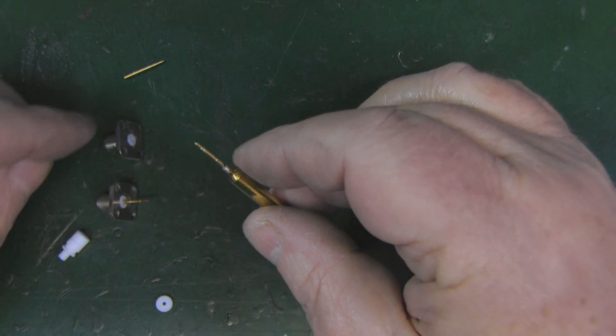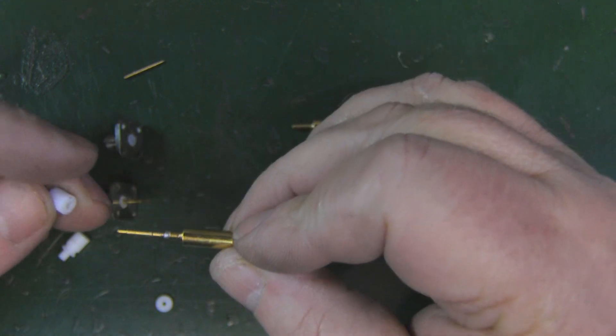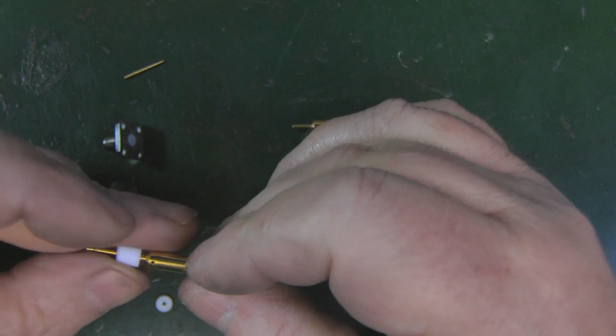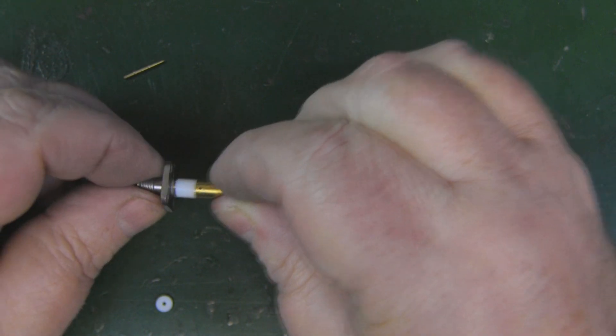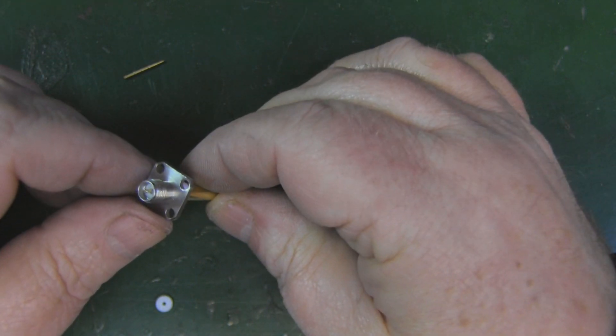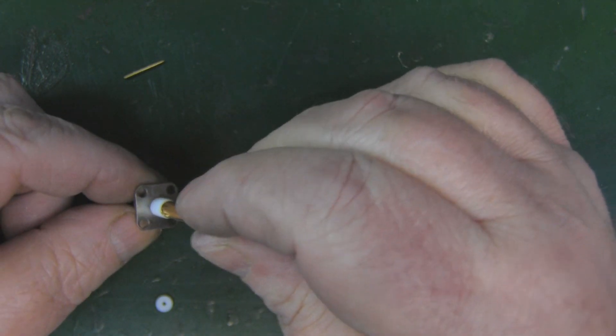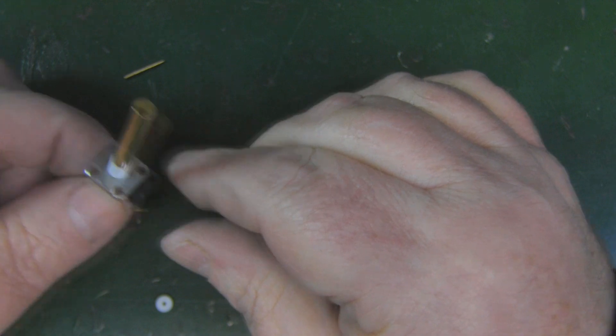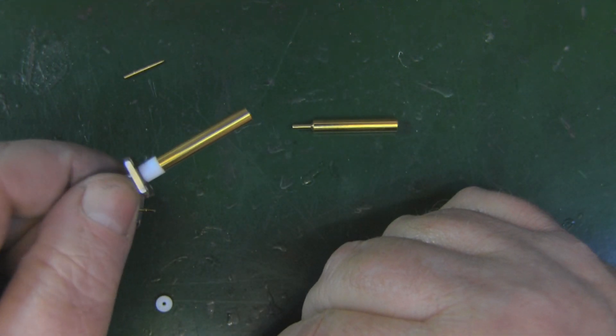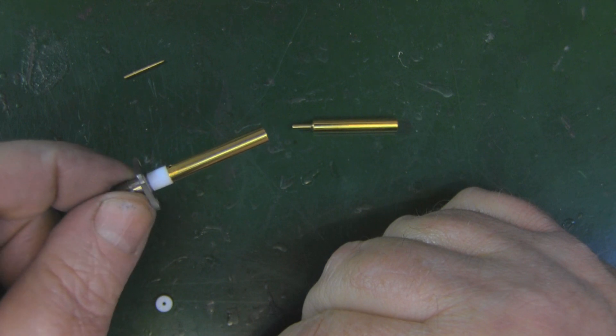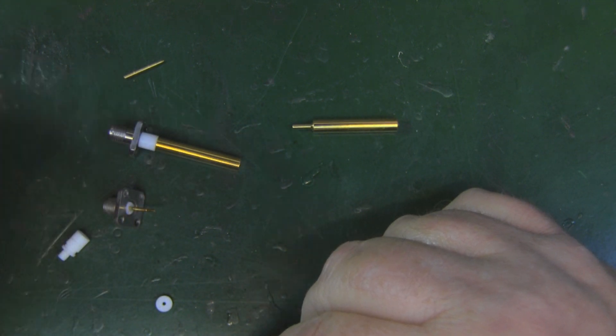I've soldered on the pin of one of the SMA connectors onto the end of the element here. I can feed that onto there and then feed it into this SMA connector. What I can do now is just bolt this onto some of the aluminum that I'm going to cut down, and I've got myself a nice little reference monopole antenna. I really like that. I wasn't expecting to do that with this antenna.